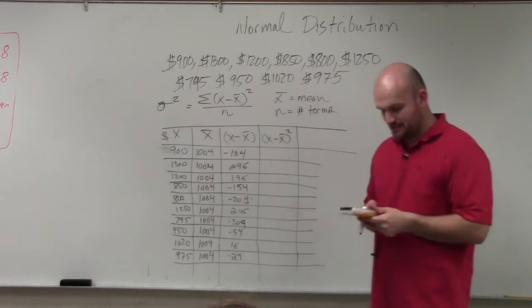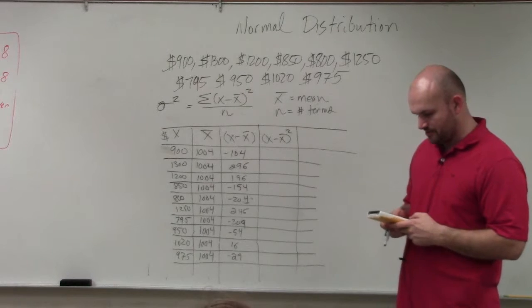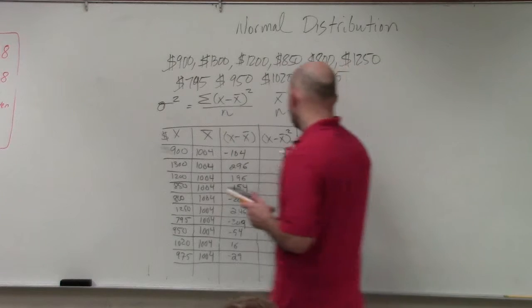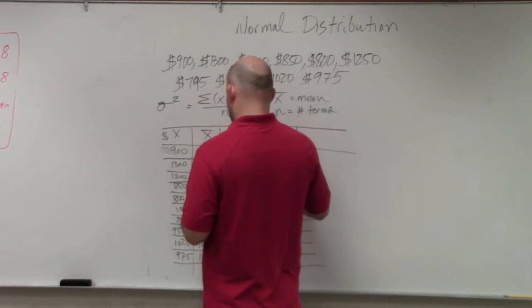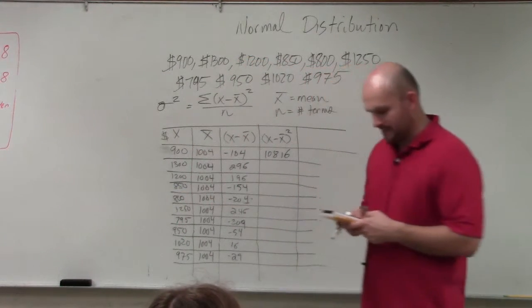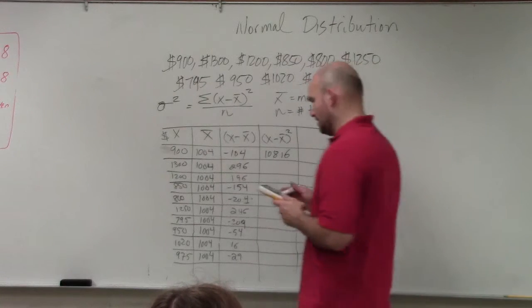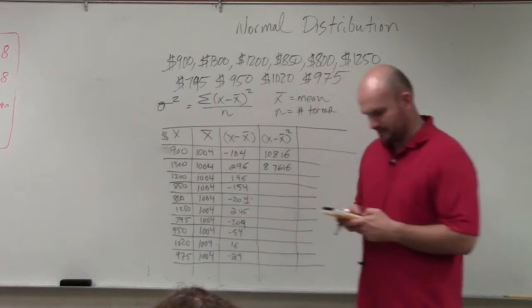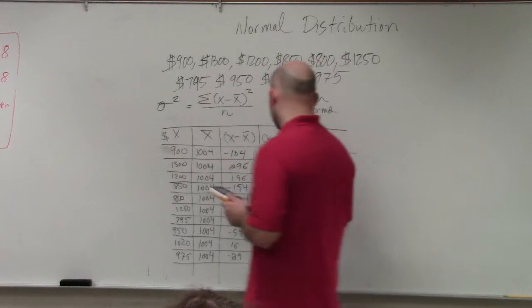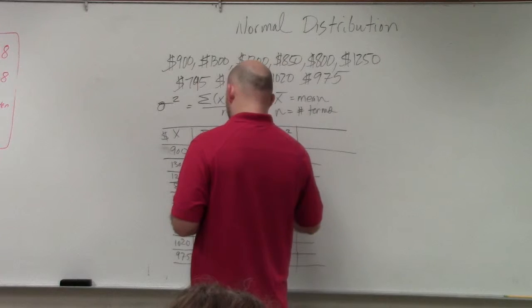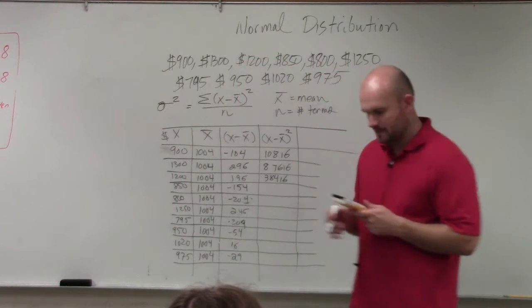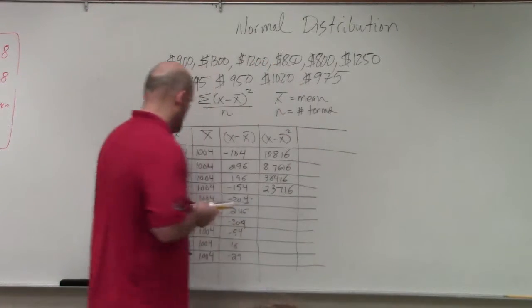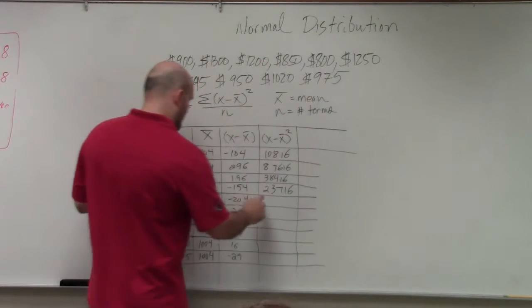Now, what's usually nice with this is now we're just going to take our number. And it doesn't matter if it's negative or positive, guys. But you're just going to find the square of each of these numbers. So this is 10,816. So then I do 296 squared, and I get 87,616. I do 196 squared, 38,416. 154 squared, 23,716. 204 squared, 41,